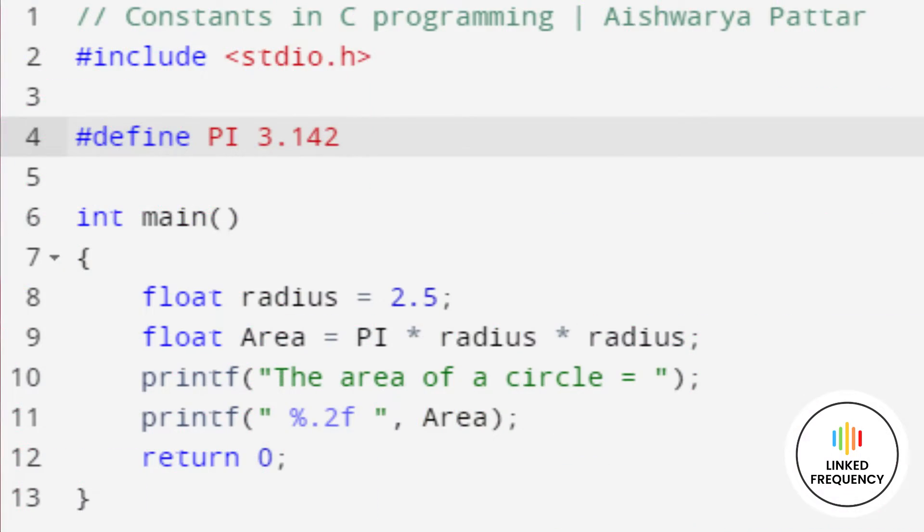The second way is by using the hash define preprocessor directive. The screen represents the example program. Here, pi is represented as hash define pi 3.142.